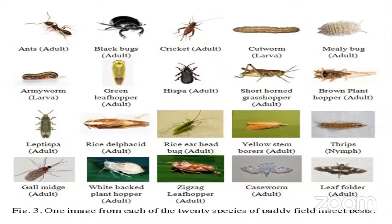This slide shows paddy insect pests. More than 20 insect species are highly damaging to paddy fields. These include ant, adult black bugs, cricket, cutworms, mealy bug, army worm, green leaf hopper, hispa, short horn, grass hopper, and brown plant hopper. All of these are plant pests.